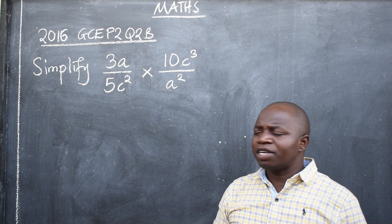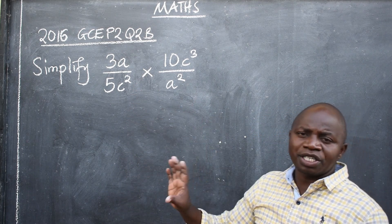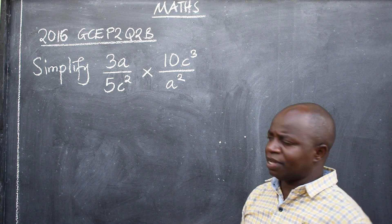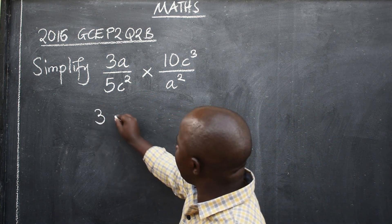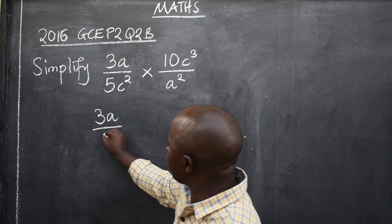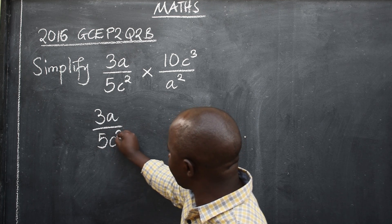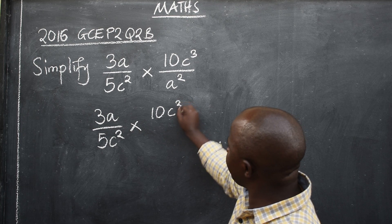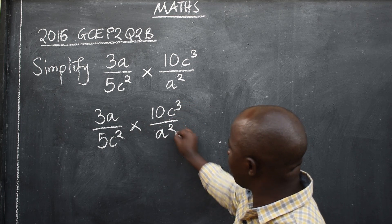The second step is to copy the question exactly the same way you are seeing it. Don't make any mistake. So we will be able to copy 3a over 5c squared times 10c to the power 3 over a squared.